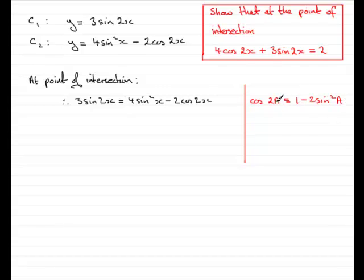Well, if we let a be an x this time, we can make sine squared x the subject. So we would have that cosine of 2x must be identical to 1 minus 2 sine squared x if we're dealing with x's.